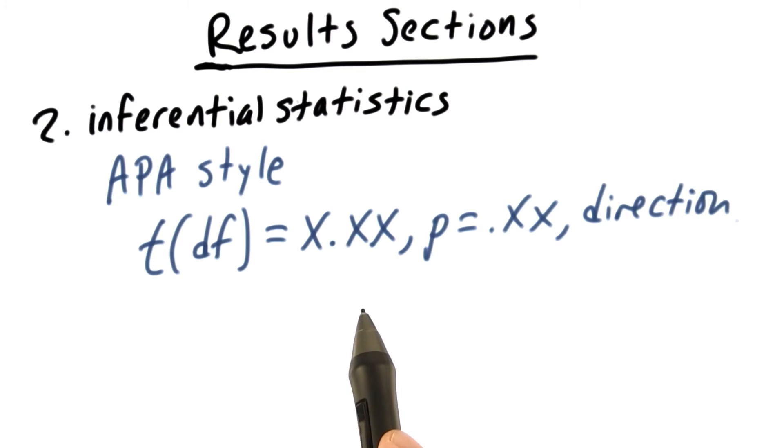So here's a generic outline of how to present the results of a t-test in APA style. First, we put the test statistic name, in this case it's t. Next to that, we put the degrees of freedom in parentheses. We put an equal sign. Then we provide the t-value, rounded to two decimal places with a comma.